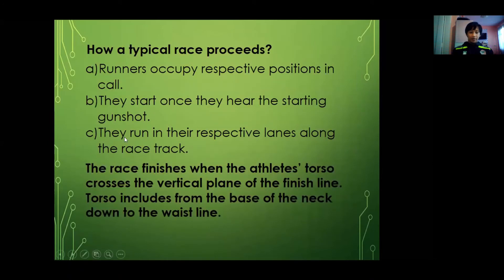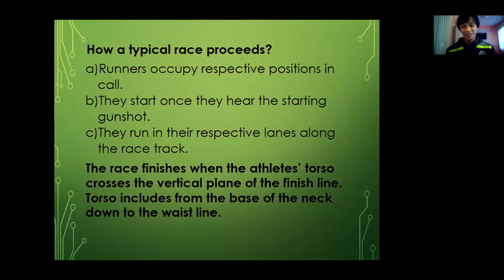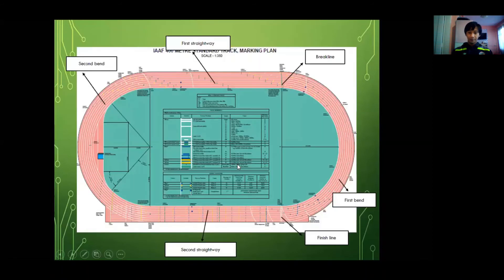A race finishes when an athlete crosses the vertical plane of the finish line with his torso — from the bottom of the neck down to the waistline. That means the shoulder, chest, and down to the waistline are the important parts when crossing the finish line. So if only your neck crosses the finish line first, it's not yet finished — your torso must cross. The vertical plane of the finish line is what counts.